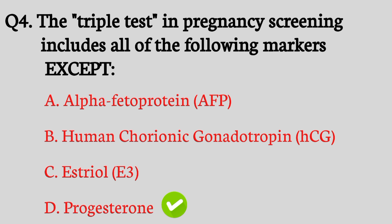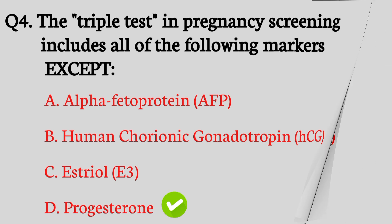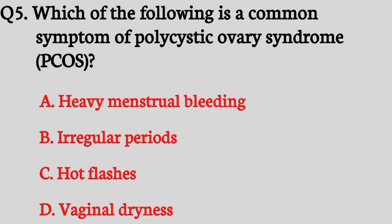Question number five. Which of the following is the common symptom of polycystic ovary syndrome? The right answer is option B: Irregular periods.